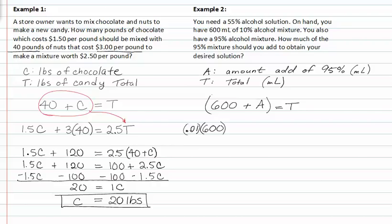And we also know that there is a 95% solution that represents A. And that gives us the total which we want to be at 55% solution.